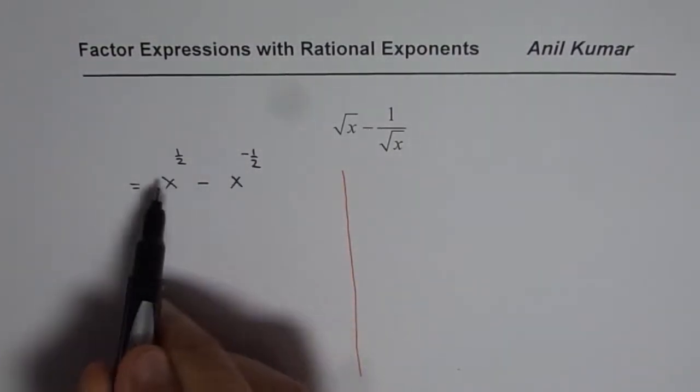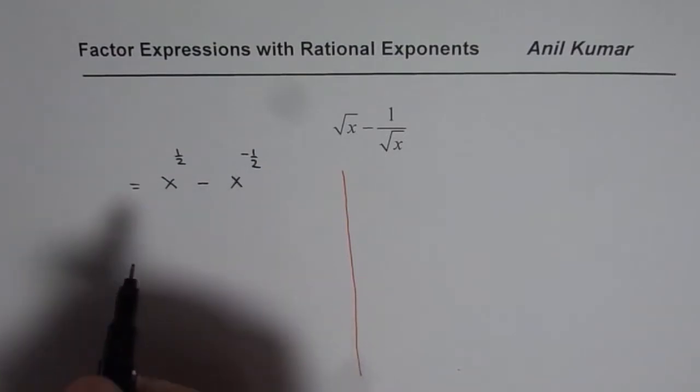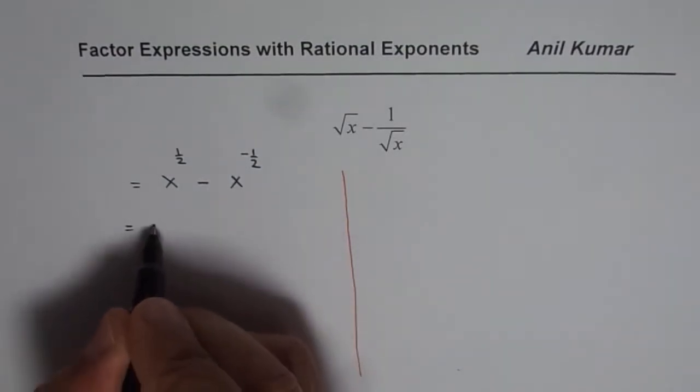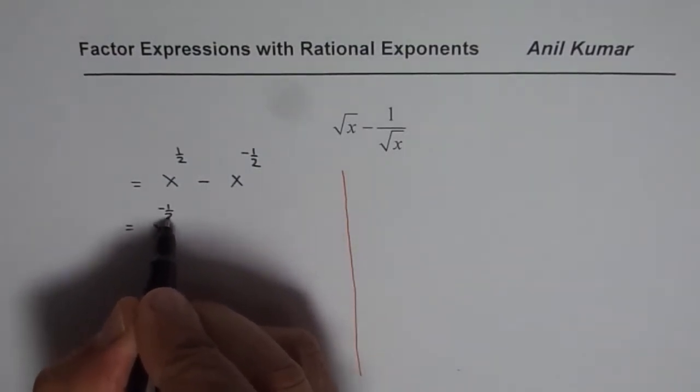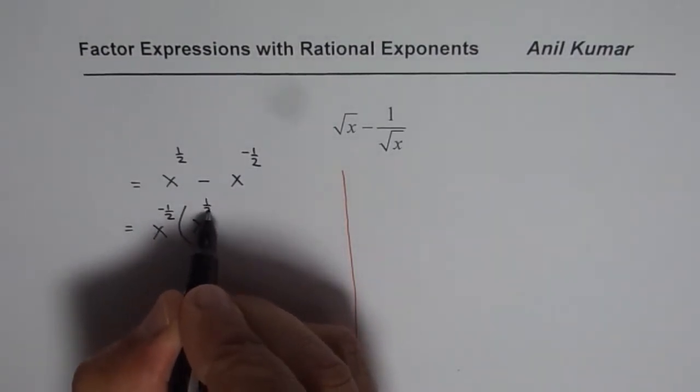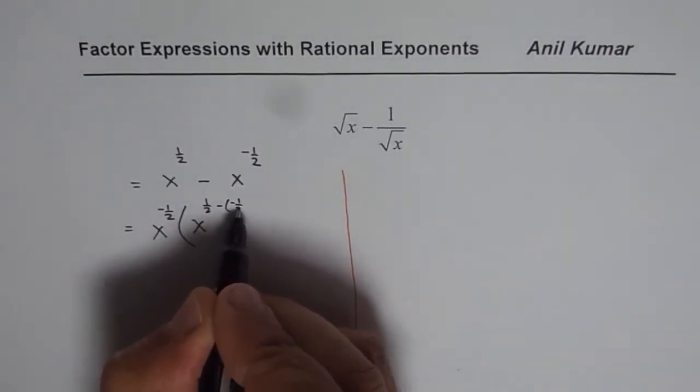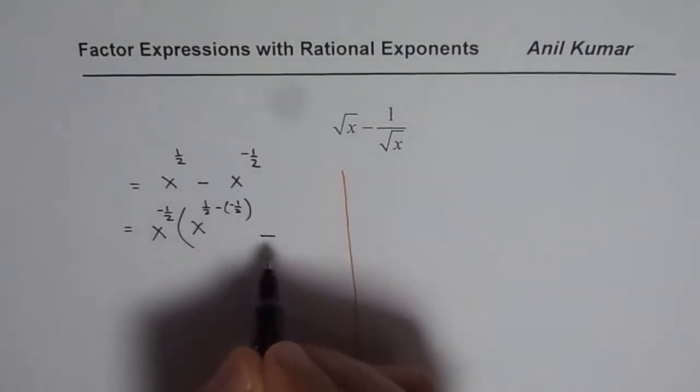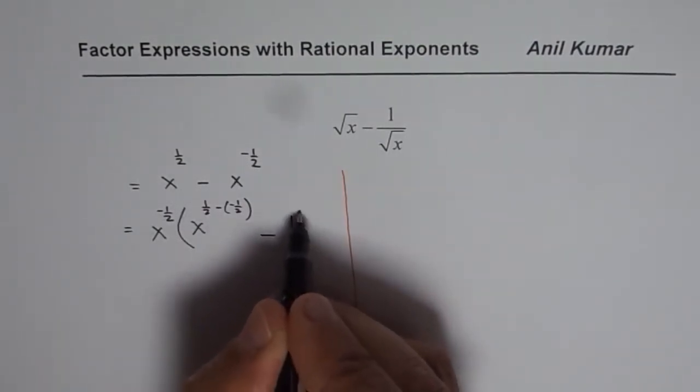Now all of these two, x to the power of minus half is lower so we can factor this half. So we get x to the power of minus half as a common factor and here we get x to the power of half minus of minus half. We have already factored this term so we'll write 1 there.